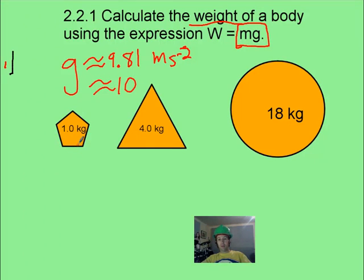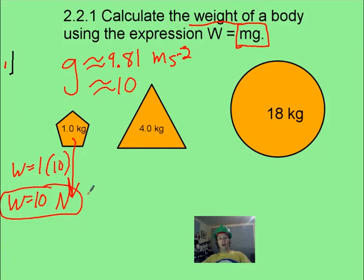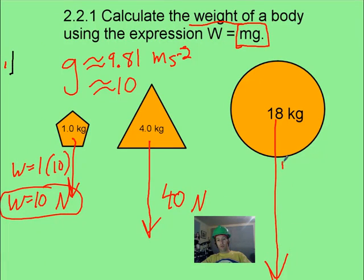Take a minute, calculate all these weights and draw an appropriate arrow. Pause it, it won't take you long. This is going to be 1 times 10, which is 10 newtons. Newtons is our unit of force for weight and for all forces. This will be 40 newtons, and this one I should draw even longer, but it's going to be 180 newtons. So always take a mass, multiply it by 10, and you've got the weight.